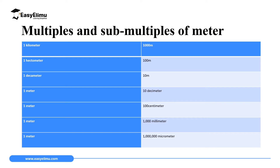Although the meter is the standard unit of length, it is sometimes too big to measure some distances — for example, the thickness of a piece of paper — and sometimes too small to measure others, such as the length of a field. We therefore need other larger and smaller units related to the meter, which is why we have multiples and submultiples of a meter.